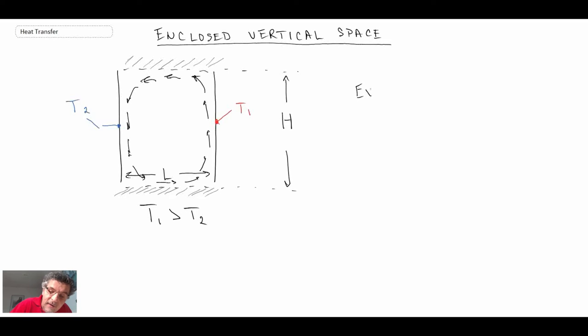Example applications where we can find this are the following. Example applications: double pane windows. So with double pane windows sometimes they'll put a gas that has lower thermal conductivity inside of the cavity.